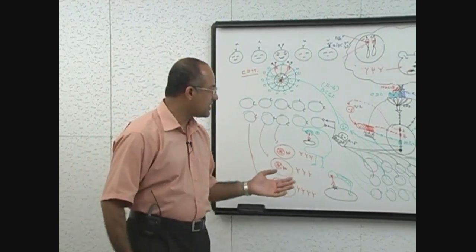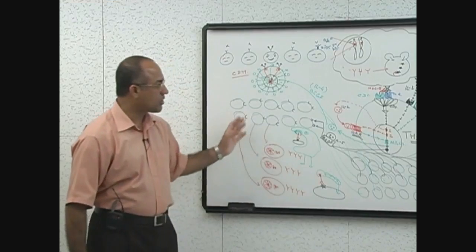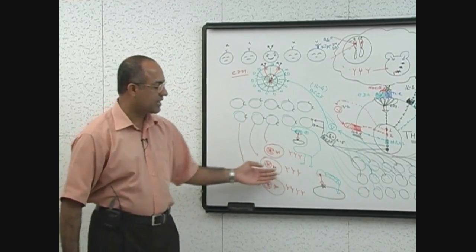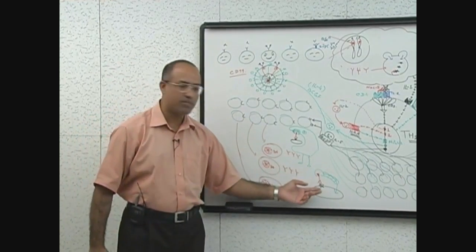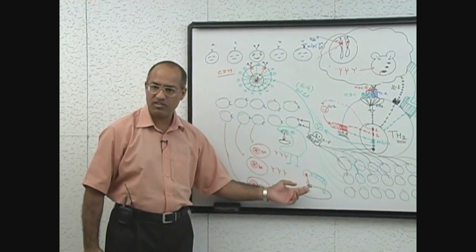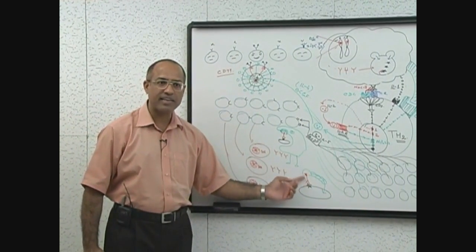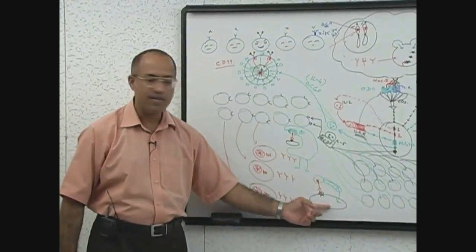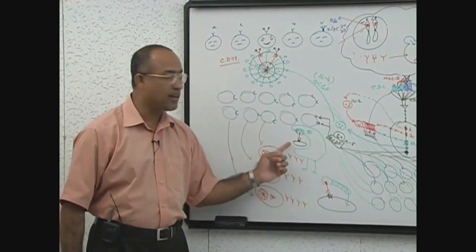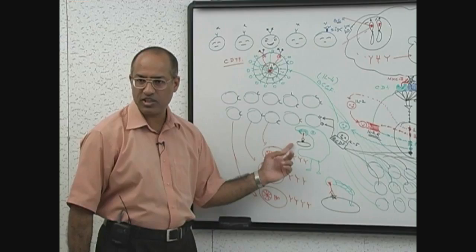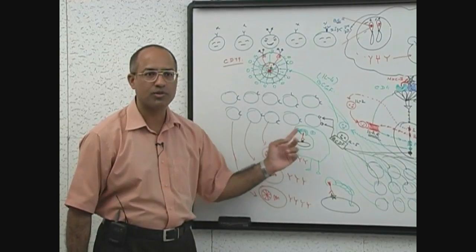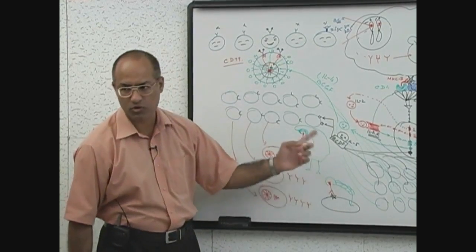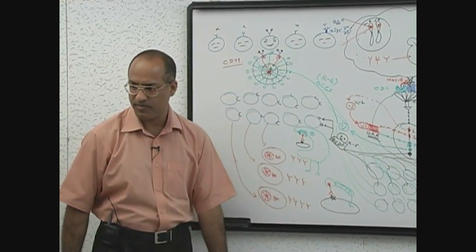So what we see is that antibodies are produced, the antibody reacts with the bacterial antigens, and either by activating the complement kills the bacteria, or leads to very efficient phagocytosis of the bacteria by neutrophils and macrophages.